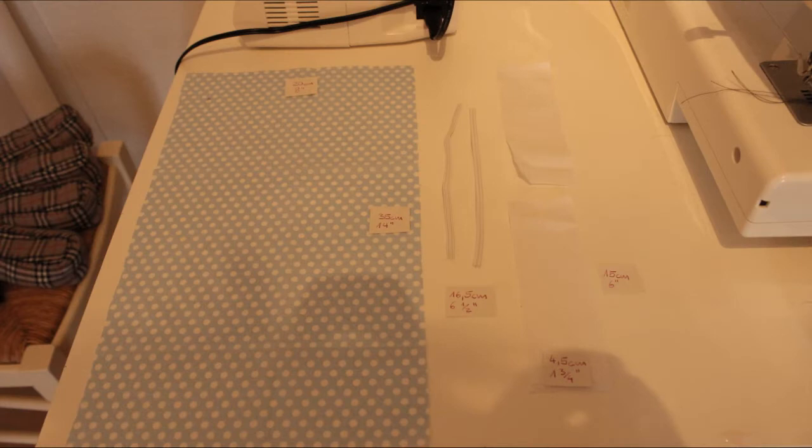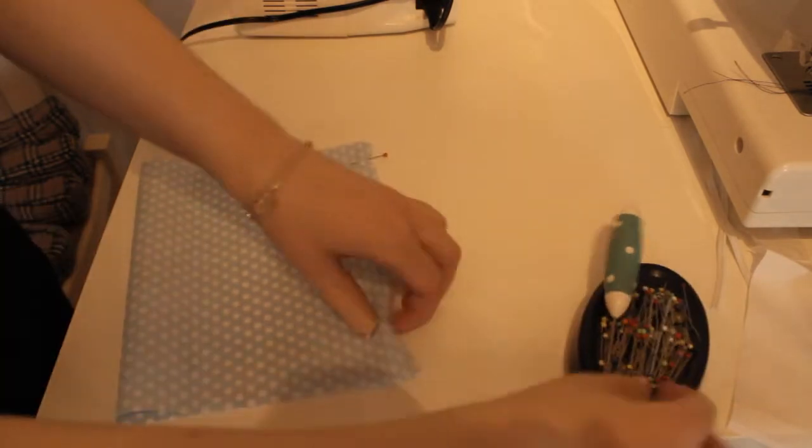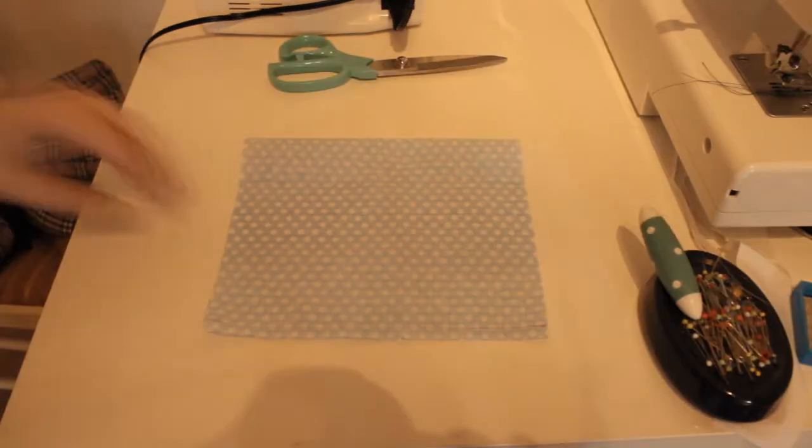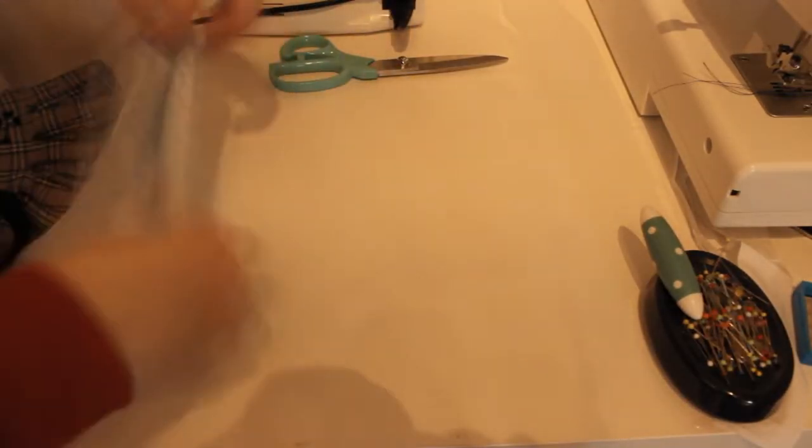These are the measurements but they are also in the description and we'll start by folding this big piece over and just sewing along the edge right there and once that's done we're gonna flip it inside out and iron it flat.